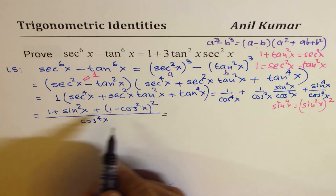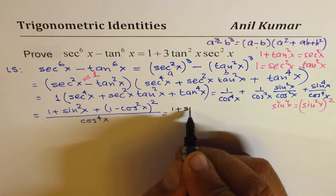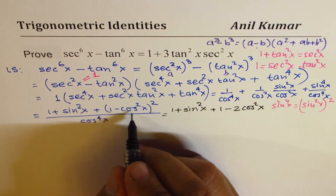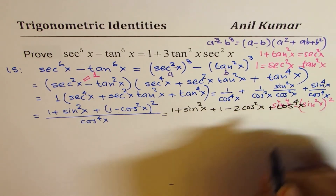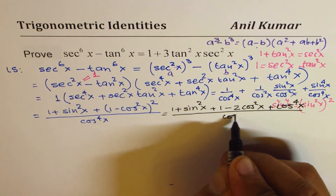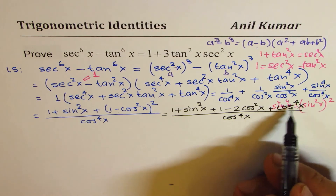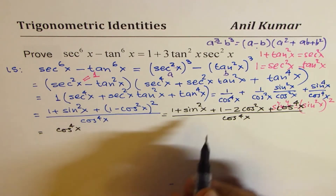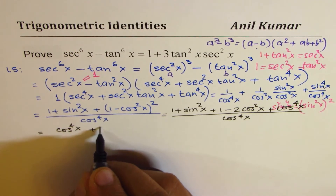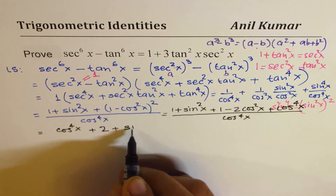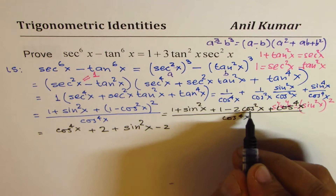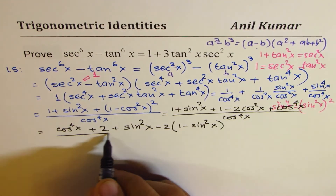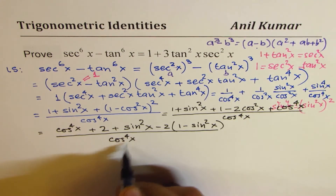We can now open this up. We get 1 plus sine squared x, and expanding 1 minus cos squared x squared gives 1 minus 2cos squared x plus cos to the power of 4x, all divided by cos to the power of 4x. The cos to the power of 4x divided by cos to the power of 4x gives 1. So we rewrite, adding cos to the power of 4x: and collecting terms, sine squared x plus sine squared x, and minus 2 times cos squared x written as 1 minus sine squared x.